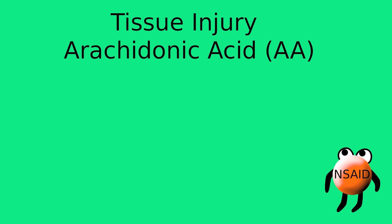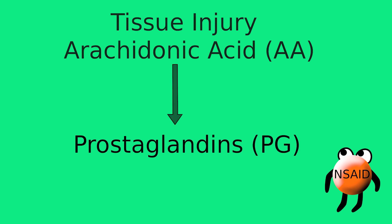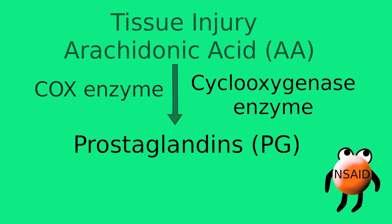You have some type of injury. There's a fatty acid called arachidonic acid that just hangs out in your tissues, and when injury occurs, it's converted to a substance called prostaglandin. This happens via an enzyme called the COX enzyme, which stands for cyclooxygenase enzyme. All this enzyme does is act like a worker bee in an assembly line — it takes arachidonic acid and converts it to prostaglandin.